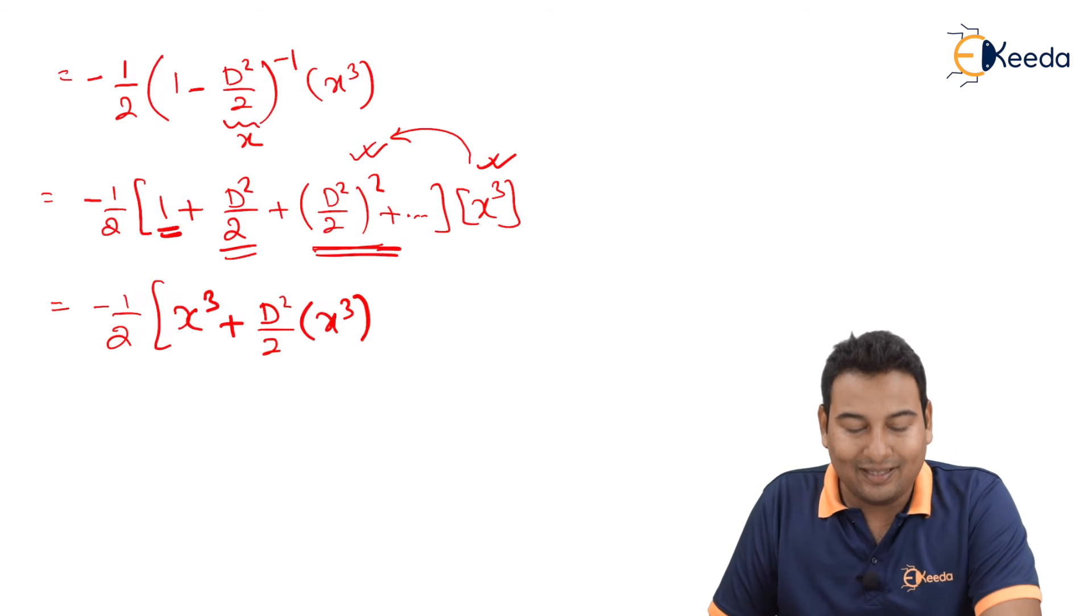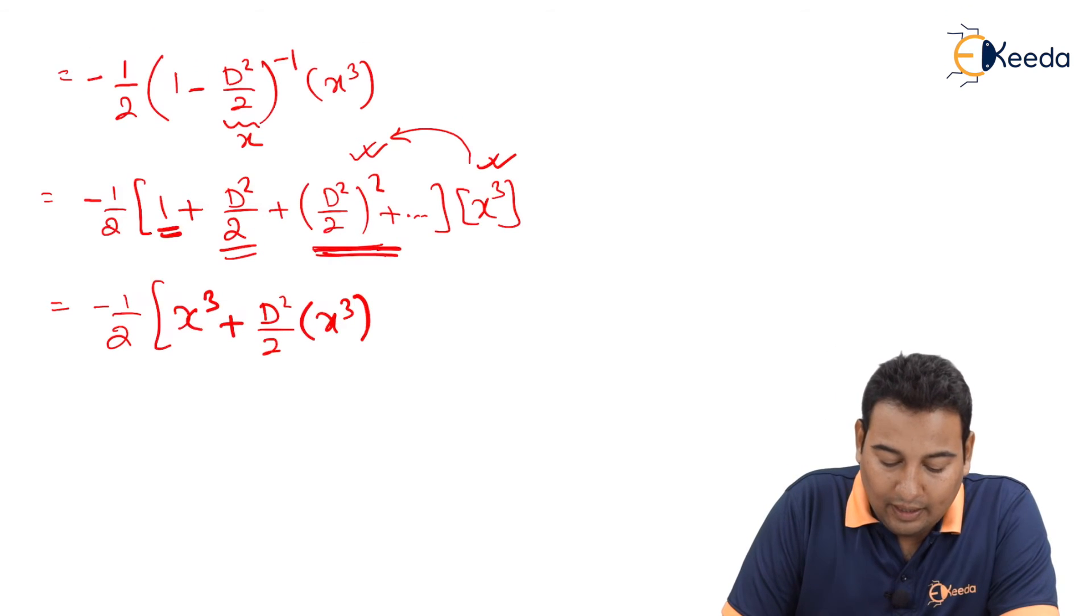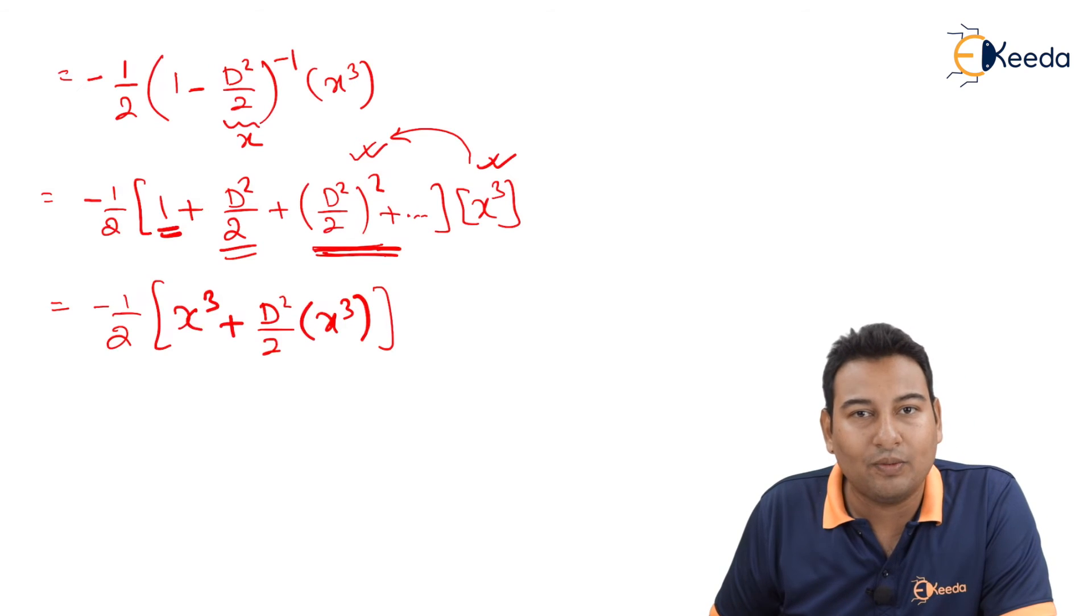If you multiply with this, the answer is 0 because actually it is D⁴, and 4th derivative of x cube is 0.